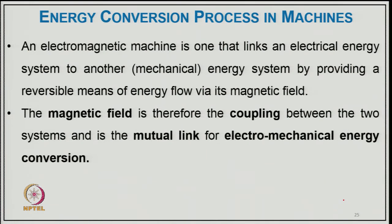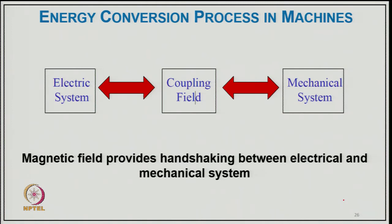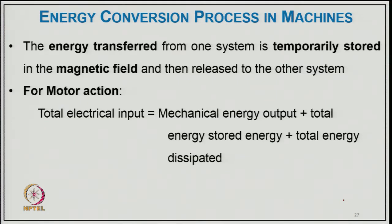An electromagnetic machine links the electrical energy system to a mechanical energy system by providing a reversible means of energy flow via the magnetic field. The magnetic field is therefore the coupling medium between the two systems and the mutual electrical link for electromechanical energy conversion. On one side is the electrical system, on the other is the mechanical system, with a coupling field in between. Energy transferred from one system is temporarily stored in the magnetic field and then released to the other system.